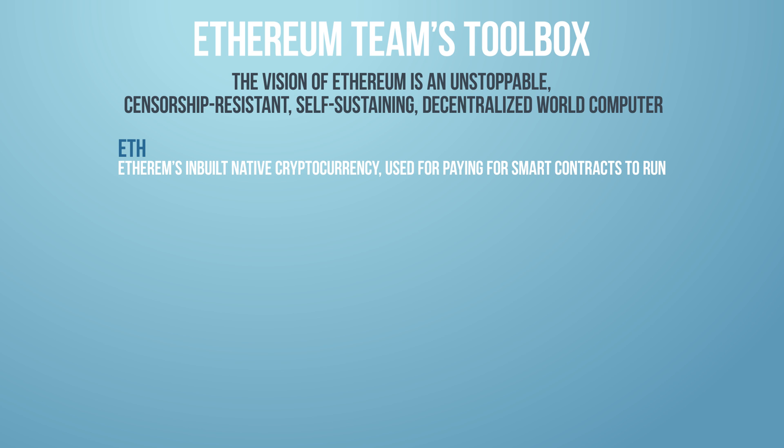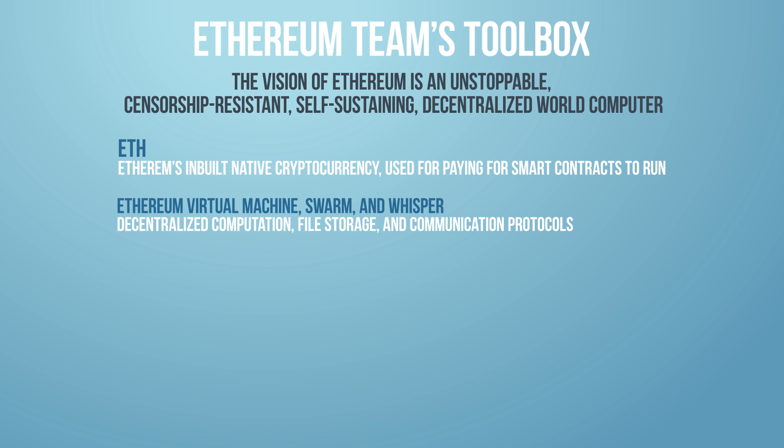Each time an application or smart contract is run, some Ether (ETH) is used for that. We'll step more into crypto economics further in the class. If we look next, we have the Ethereum Virtual Machine and things like Swarm, which is great for storing data that's not on the blockchain — for example, if you want to store a large video file or music, it's more cost-efficient to not store that on the blockchain.